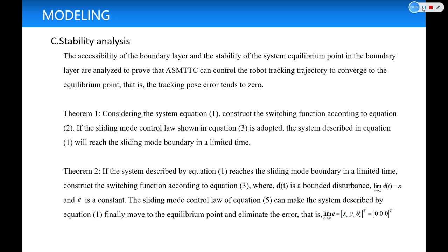Theorem 2: If the system described by equation 1 reaches the sliding mode boundary in a limited time, construct the switching function according to equation 3, where dt is a bounded disturbance, limited dp equals epsilon, and epsilon is a constant. The sliding mode control law of equation 5 can make the system described by equation 1 finally move to the equilibrium point and eliminate the error. That is, limited e equals xe, ye, theta e, t equals 0, 0, 0, t.